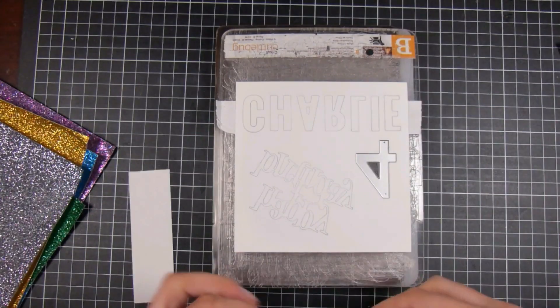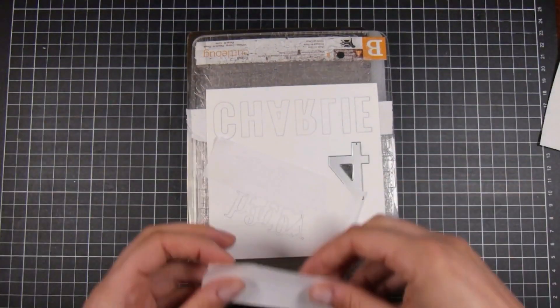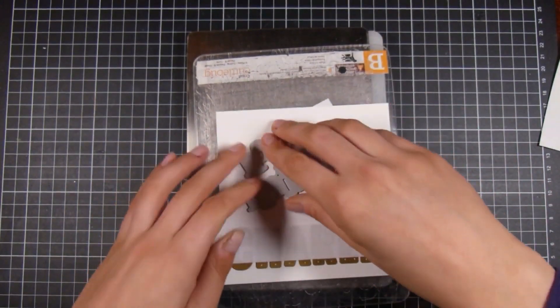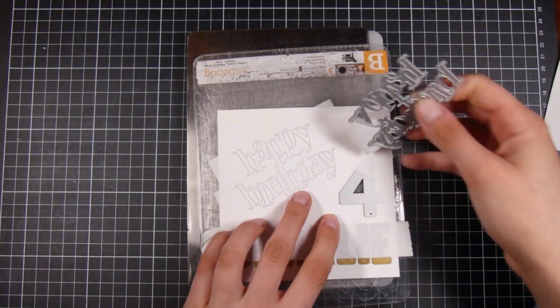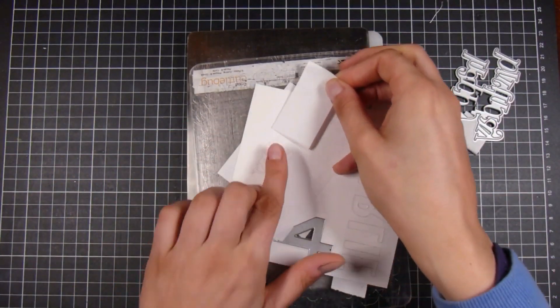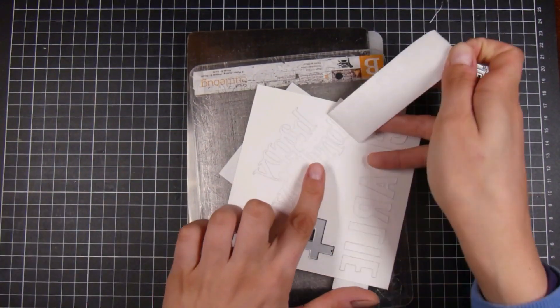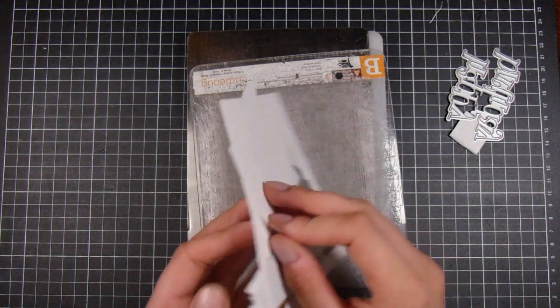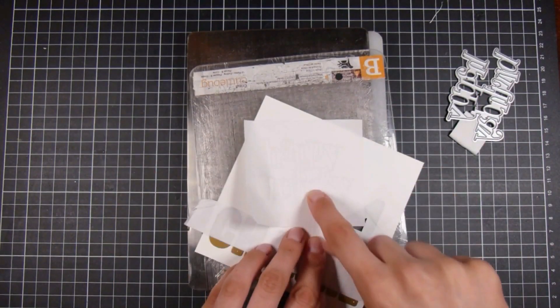Now what I want to do is I want to keep all those little pieces of the happy birthday together. So first of all I'm going to put some tape on the back, and then I'm gonna put a little piece of masking paper on the front, and that will keep all of the pieces together.